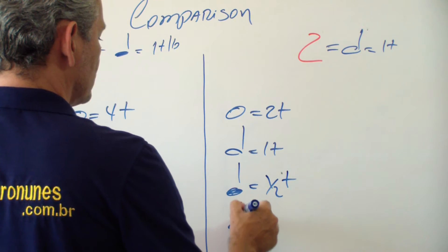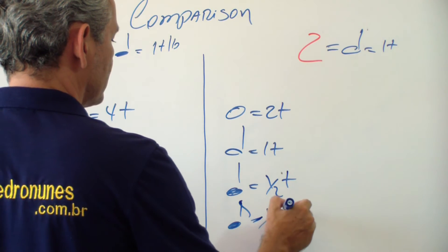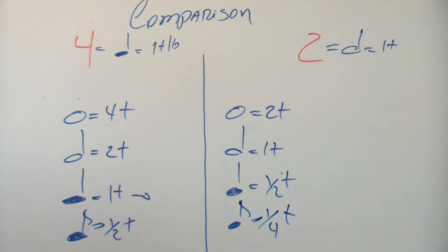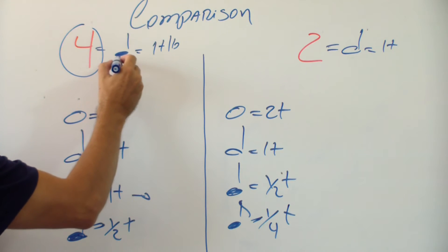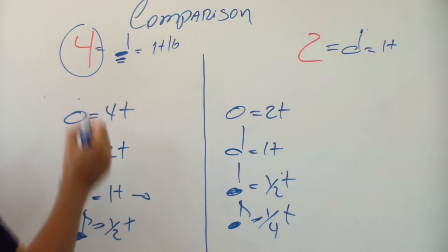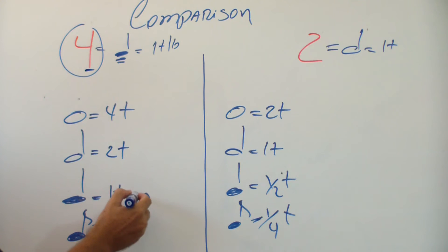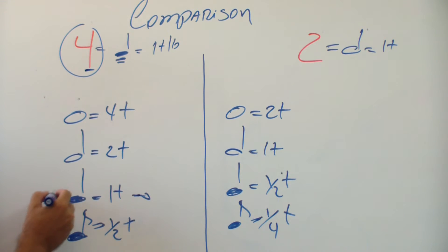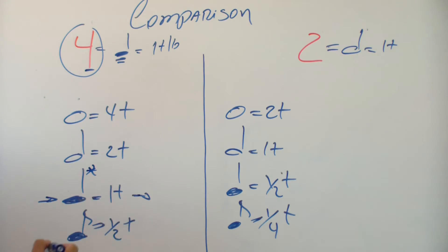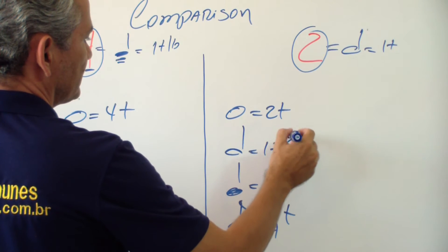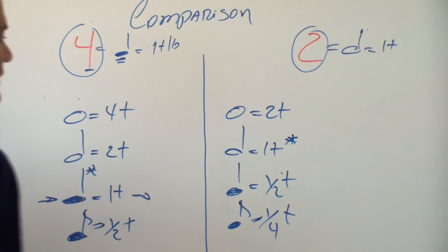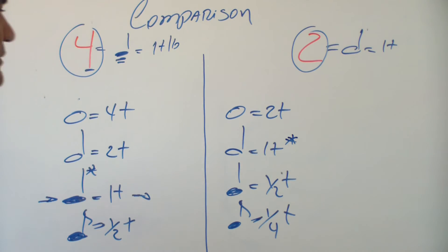With a half note worth one time, whole notes are worth two times, quarter notes are worth half a time, and eighth notes are worth a quarter of a time. So this bottom number tells you which note is worth one time. When you have four, the quarter note is worth one time. When you have two, the half note is worth one time.